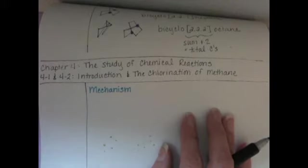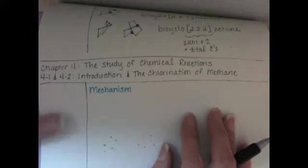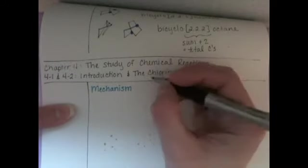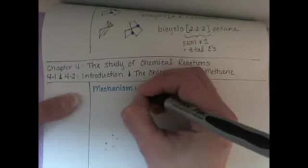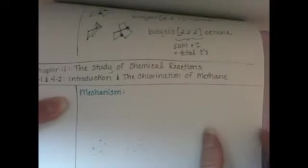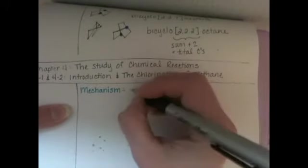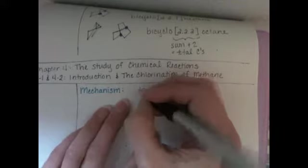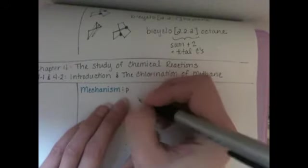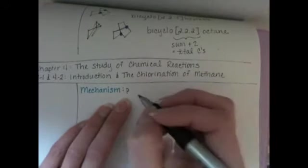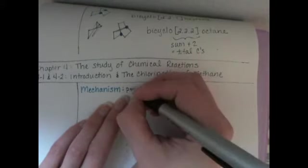We weren't really looking at how the atoms came together and interacted with each other, or how the molecules came together and interacted with each other. In organic chemistry, we do focus more in detail on how the molecules are interacting. The mechanism is a description of how the molecules get exactly from the reactant to the product.